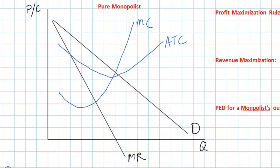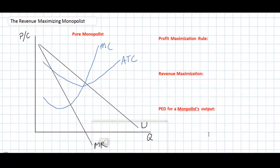Also in our previous lesson we illustrated and explained why marginal revenue for a monopolist always lies below the demand curve. This means that at any given level of output the firm's marginal revenue will be less than the price that it sells its output for.